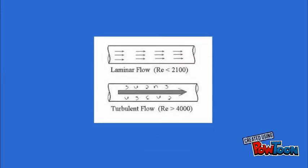laminar, or intermediate flow. The Reynolds number for laminar is less than 2,100. For turbulent flow, it is more than 4,000.